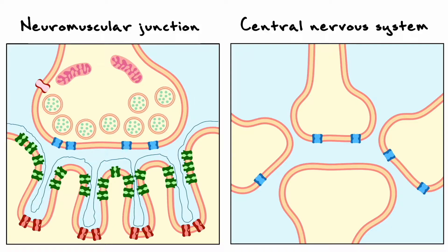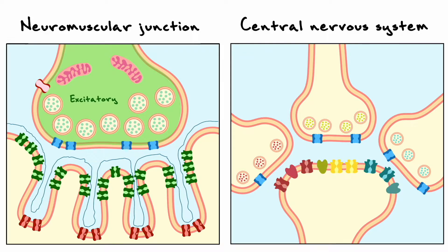Secondly, signal transmission in the neuromuscular junction is mediated by a system of one neurotransmitter, acetylcholine, binding to one postsynaptic receptor, the ionotropic nicotinic acetylcholine receptor. As a result of this simplicity, muscle fibers only receive excitatory inputs. On the other hand, chemical transmission in the central nervous system can be mediated by many different neurotransmitters, which bind on many different receptors that can be either ionotropic or metabotropic. Due to this diversity, postsynaptic neurons can receive excitatory or inhibitory inputs.